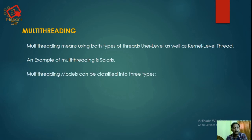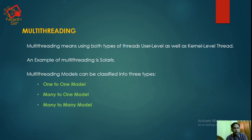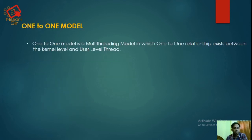Multithreading models can be classified into three types: one-to-one model, many-to-one model, and many-to-many model. In the one-to-one model, a one-to-one relationship exists between the kernel-level thread and user-level thread.